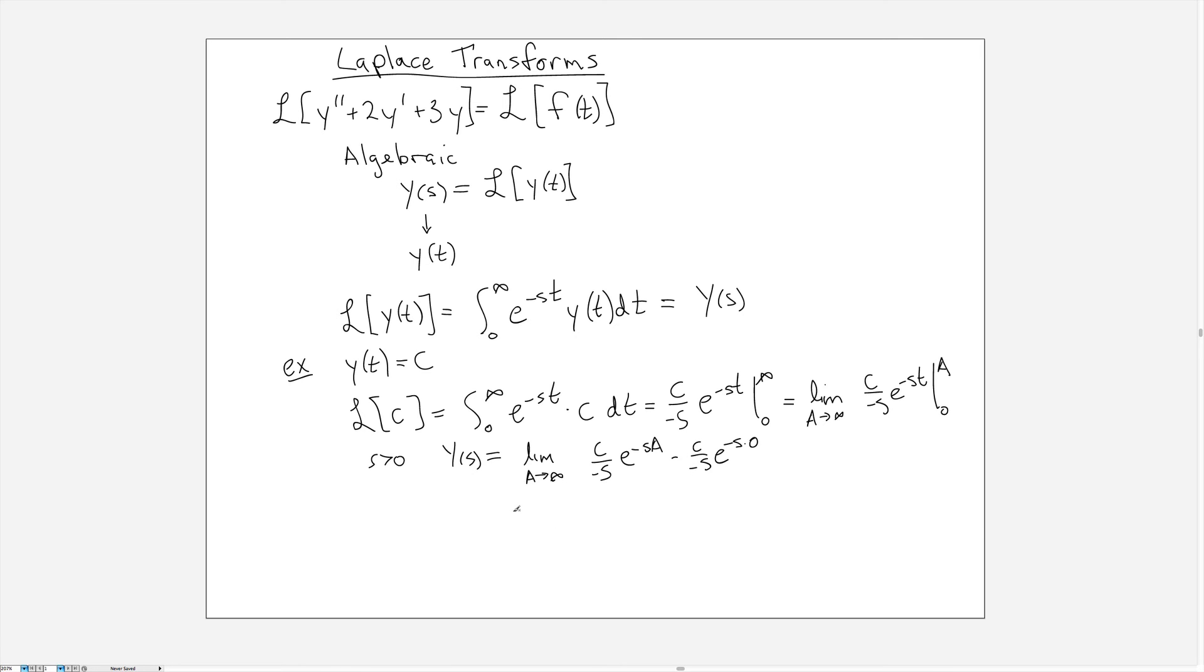So this whole term here becomes 1 multiplied by C over minus S, and the minus and minus signs combine to make a plus, and we get C over S. Now we add to that the limit as A goes to infinity of C over minus S e to the minus S A. And as long as S is positive, then we know that with a large positive A value this exponential is very small, so as A goes to infinity this whole expression here will go to 0. So that means we have C over S for the Laplace transform when S is positive.